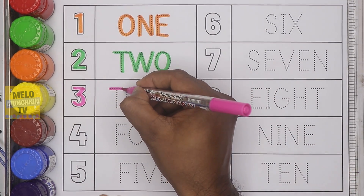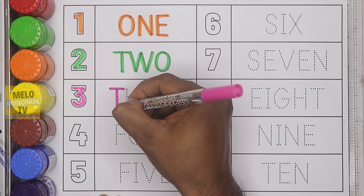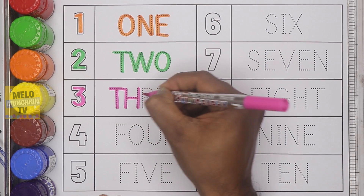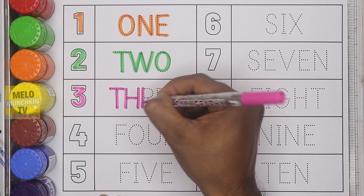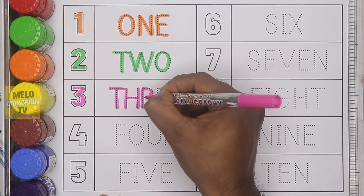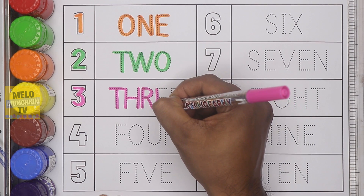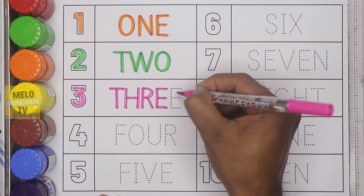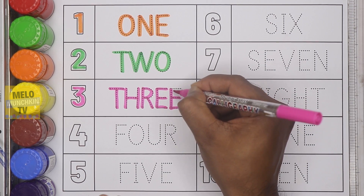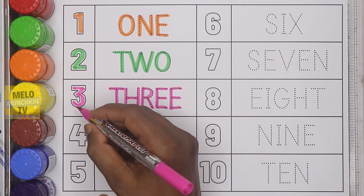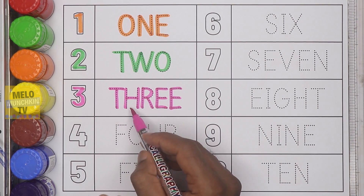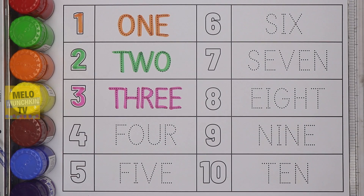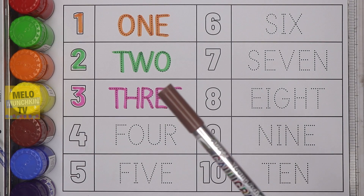Next, I'll take pink color and write number three. This is number three and the spelling is T-H-R-E-E, three.